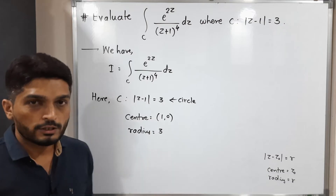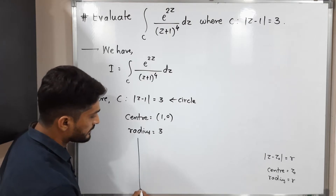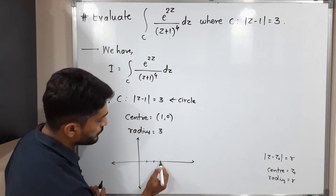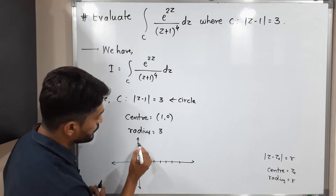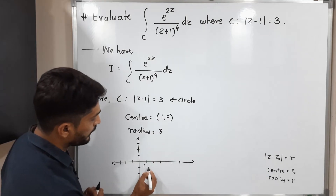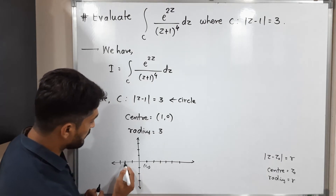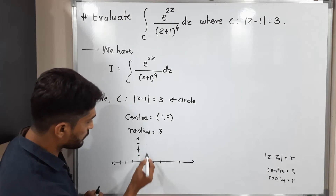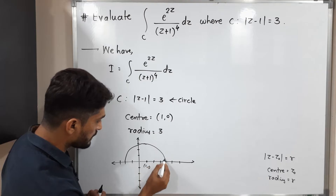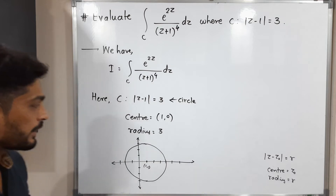Let us draw a rough sketch of the closed curve C. This is the real axis and this is the imaginary axis. The center of the circle is at (1, 0) with radius 3, so the circle extends 3 units in each direction from the center. This is the circle we have.